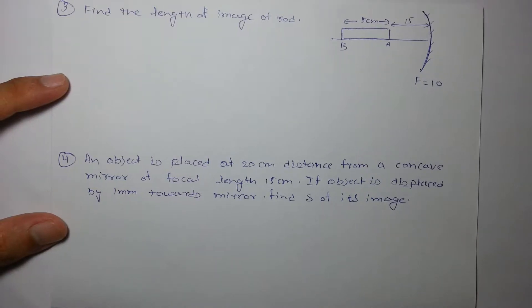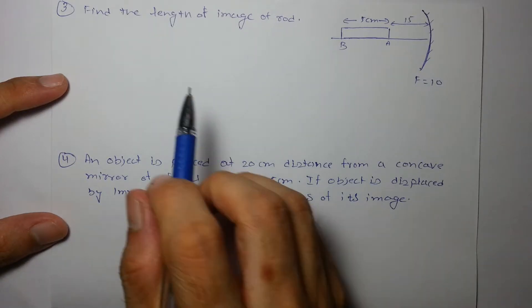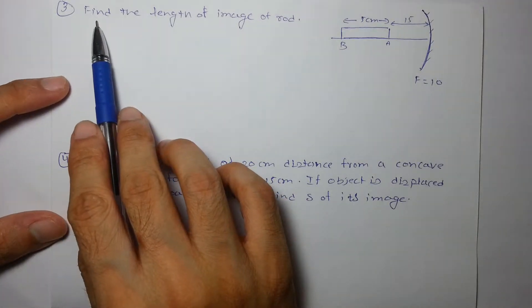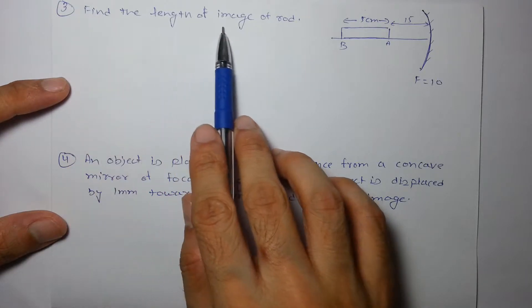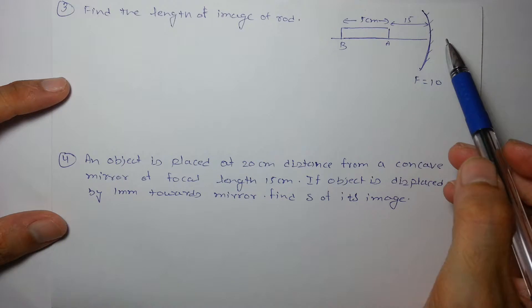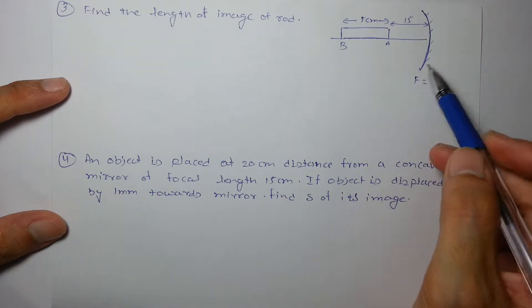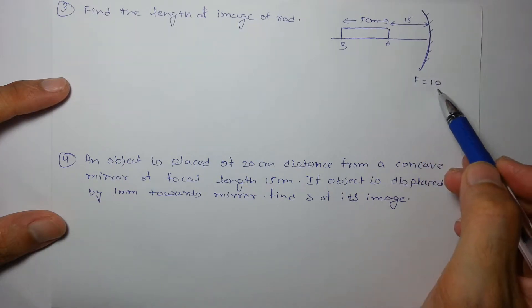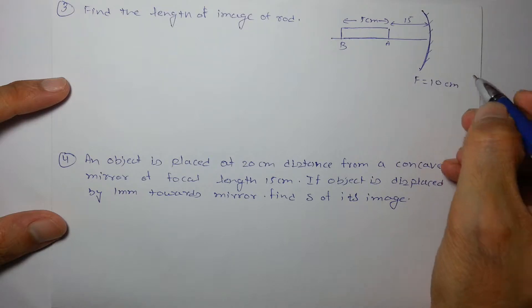Hi guys, in this video we will be solving a few important questions related to curved mirrors. Let's start with the first one. Find the length of image of the rod. There is a rod of 5 centimeter which is placed in front of a concave mirror of focal length 10 centimeter.